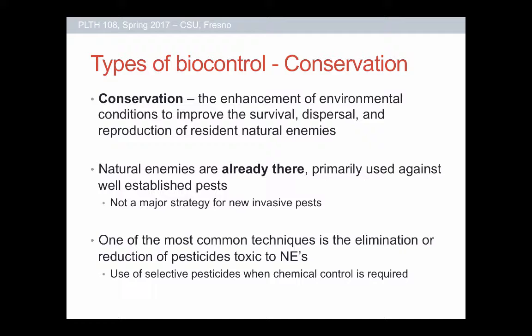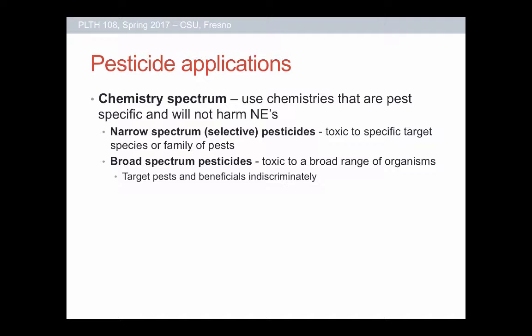Selective pesticides are generally considered the best way to address this immediately. When we talk about selective pesticides, there are two major ways to get at this. The first is through the chemistry spectrum — the idea that not all chemistries are broad-spectrum. We have narrow-spectrum versus broad-spectrum pesticides. Narrow-spectrum, also known as selective pesticides, are those toxic to a specific target species or maybe to a specific family of pests.